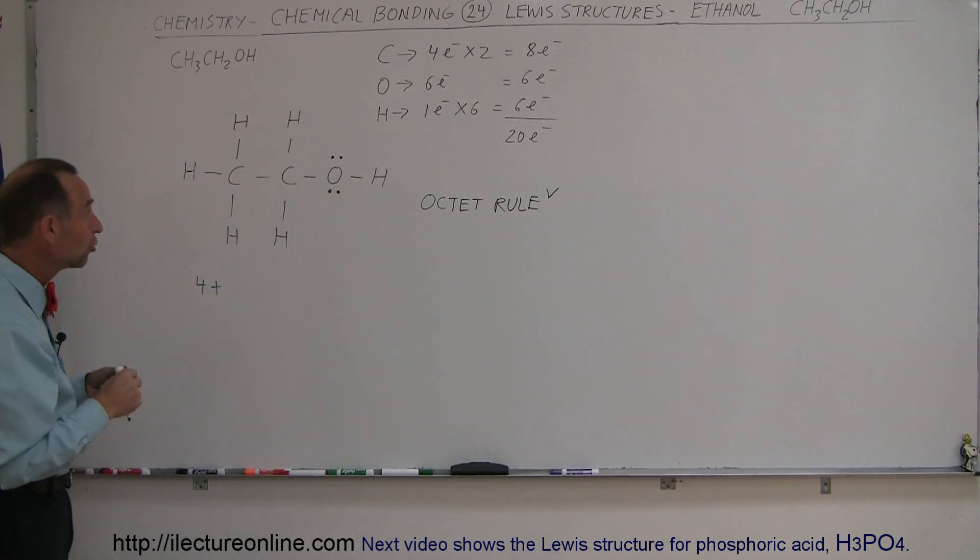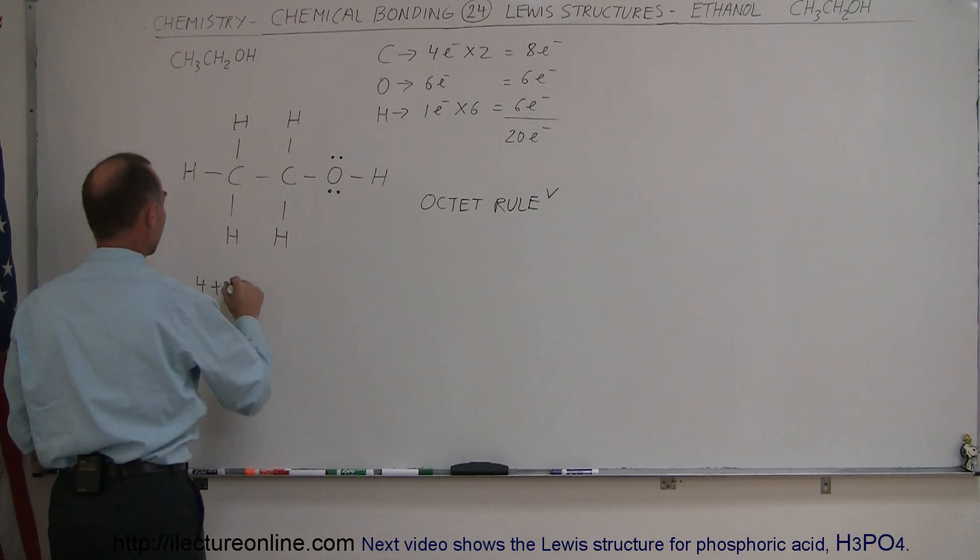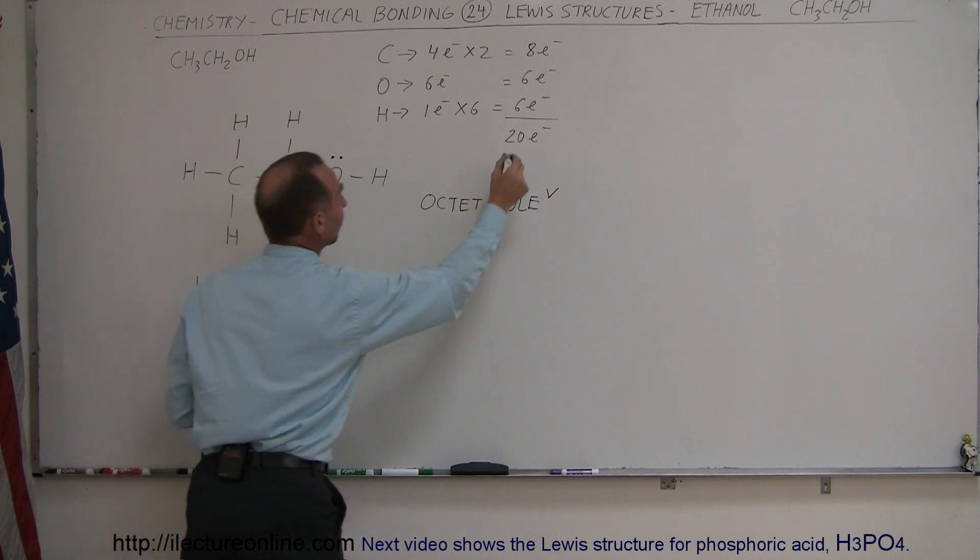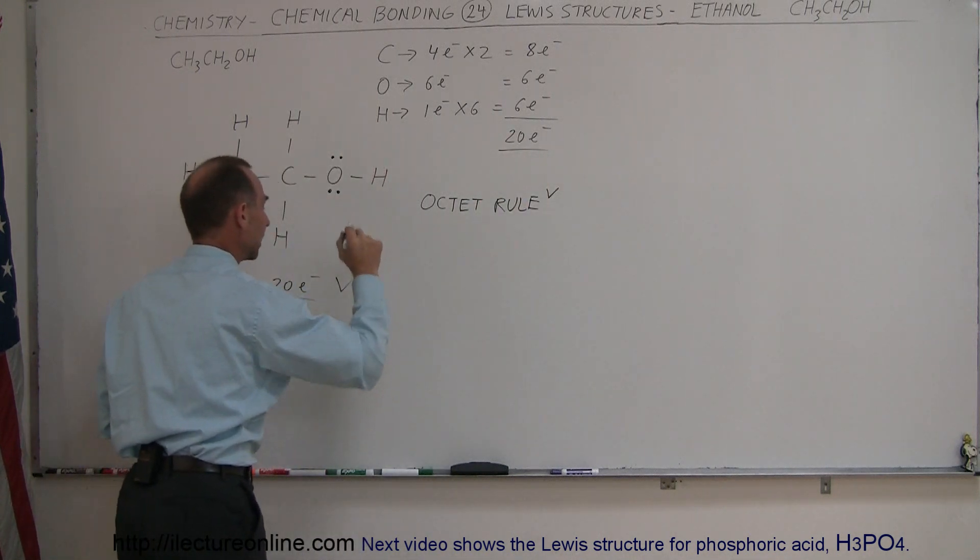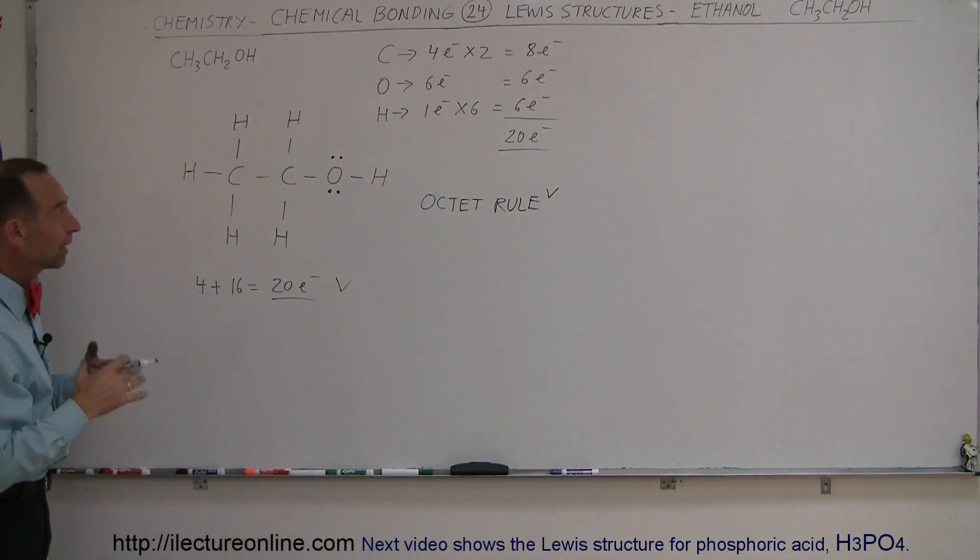Eight bonds will use 16 electrons, so that would be plus 16, giving us a total of 20 electrons, and it looks like that's the proper number. So the electrons used in this structure is the proper number.